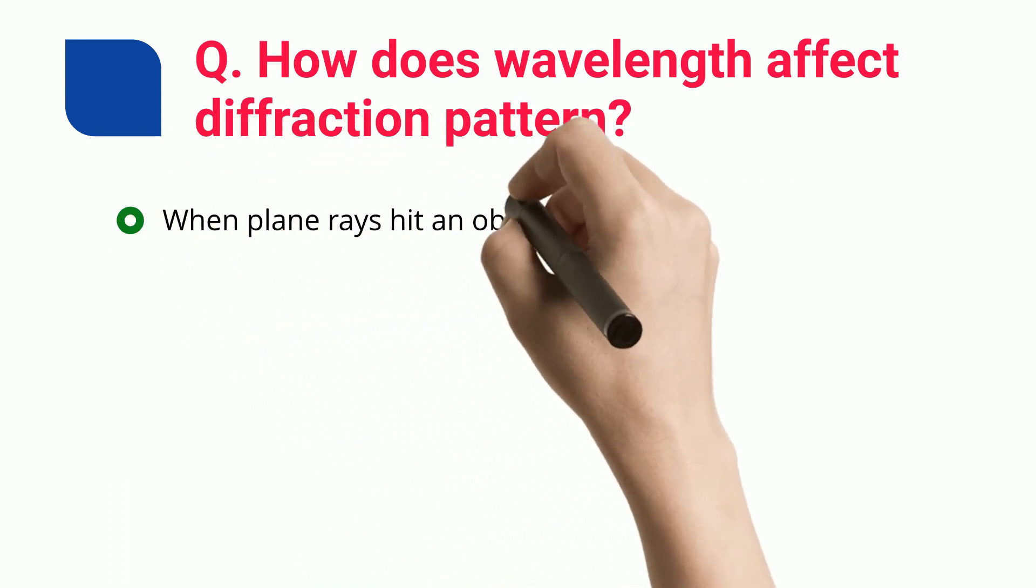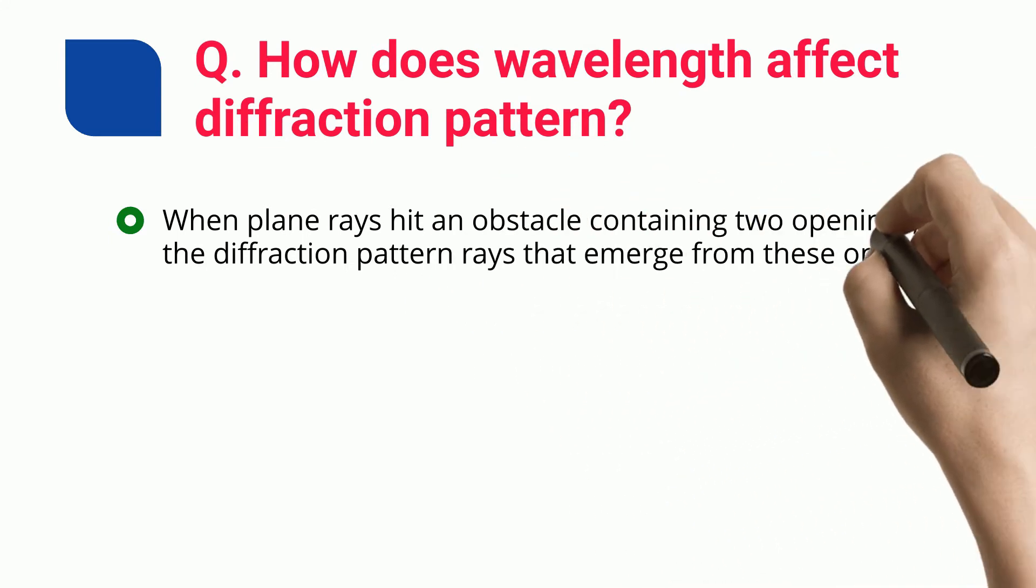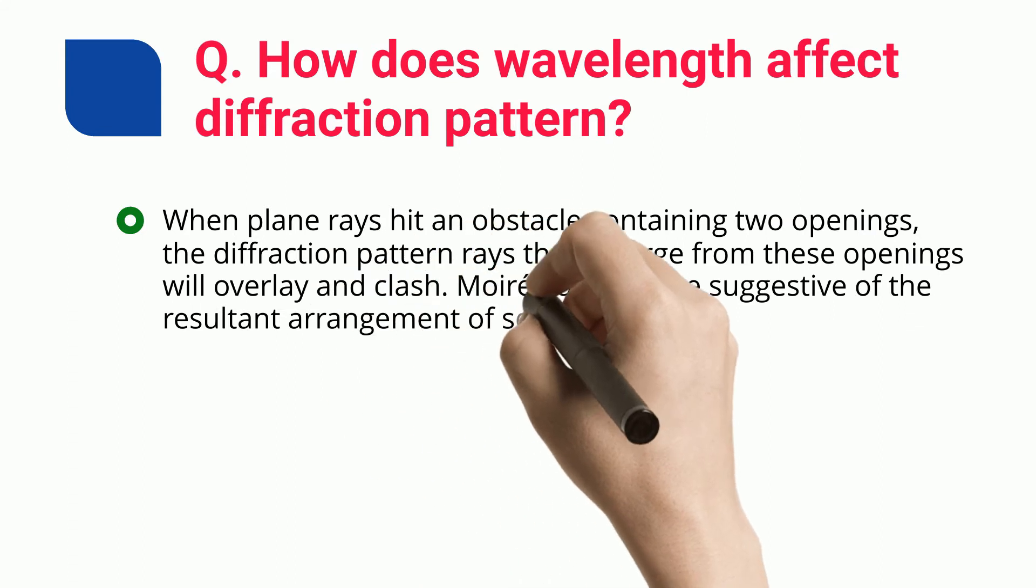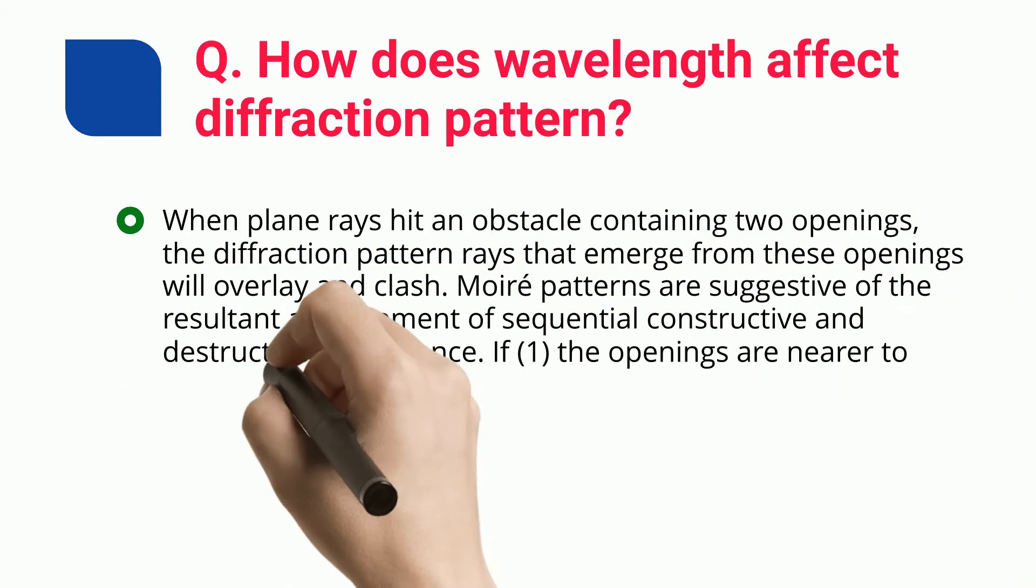When plane rays hit an obstacle containing two openings, the diffraction pattern rays that emerge from these openings will overlay and clash. Moiré patterns are suggestive of the resultant arrangement of sequential constructive and destructive interference.